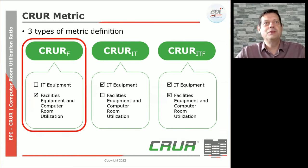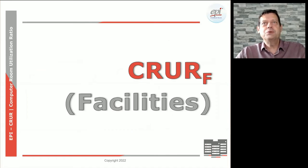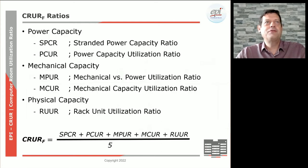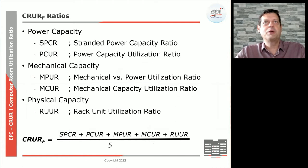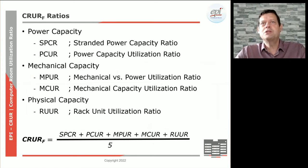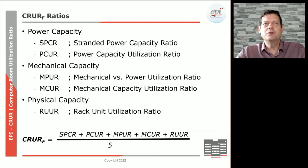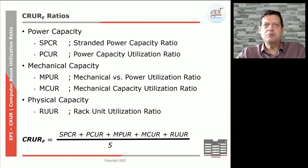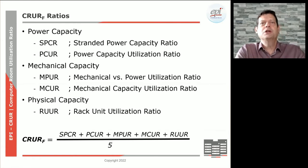For today's presentation, we're going to zoom in on the facility portion — what it is all about and what information you would need to collect in order to start looking at this number. CRUR facility, indicated by the lower number F, is basically looking at three aspects of the facility: power capacity, mechanical capacity, and physical capacity. As you can see on the bottom of the slide, the CRUR is basically adding the individual ratios divided by five — taking the average of the five sub-ratios we are measuring for the facility.